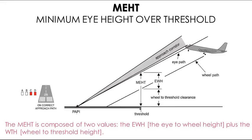Minimum Eye Height over Threshold — MEHT — is composed of two values: EWH, which is the eye-to-wheel height, plus WTH, which is the wheel-to-threshold height. The lowest point where the PAPI signal is useful is called MEHT. Minimum Eye Height over Threshold is included in the AIP for the particular runway for the critical aircraft, and the declared MEHT makes assumptions regarding the position of the pilot's eyes and the eye-level aerial of the aircraft.